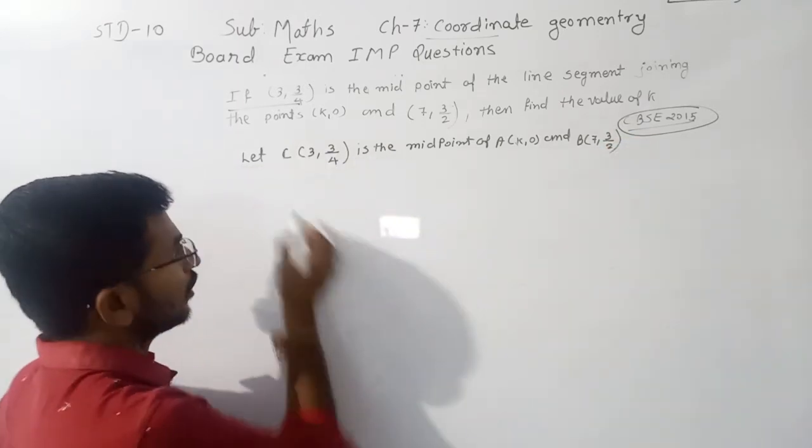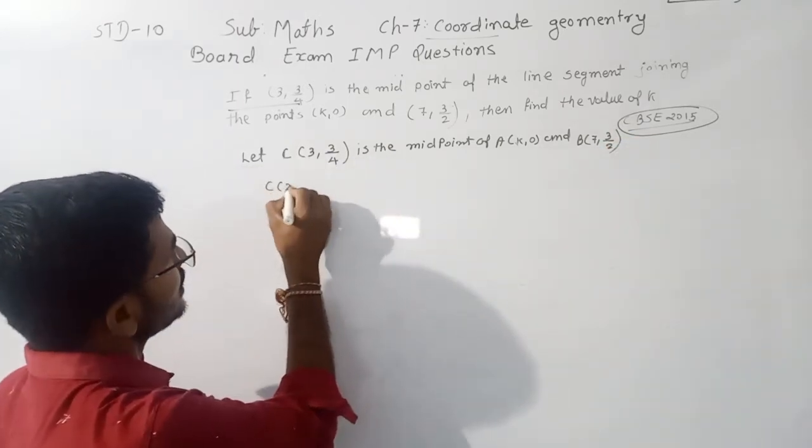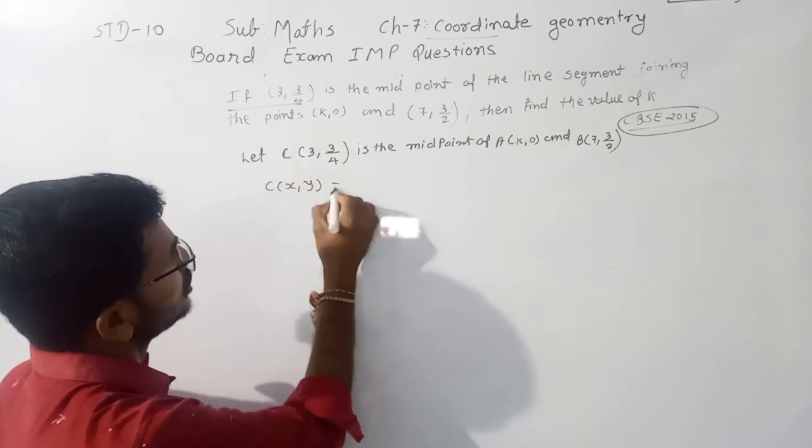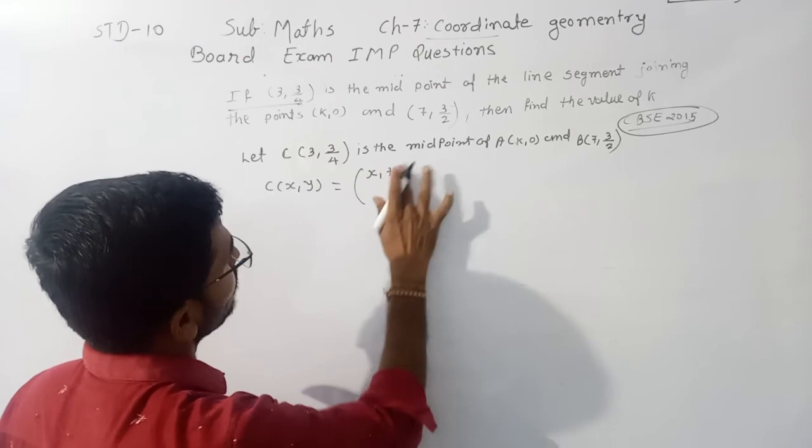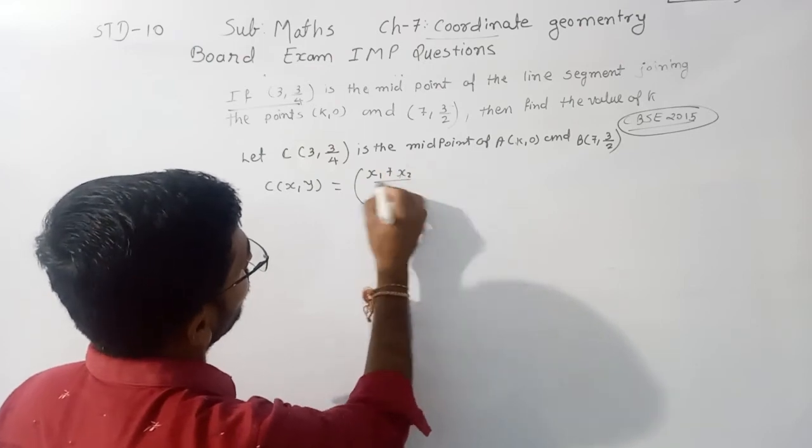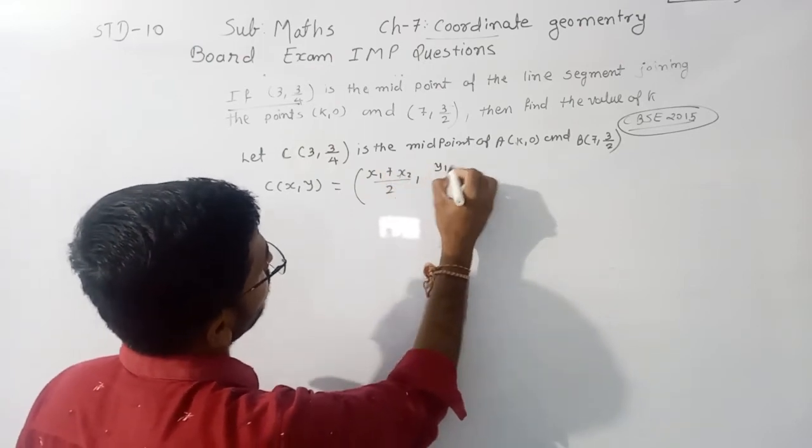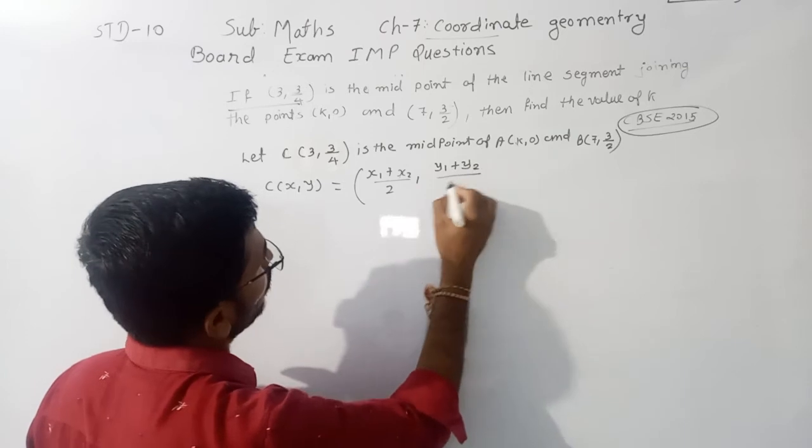According to midpoint theorem, C(x,y) is equal to (x1+x2)/2 and (y1+y2)/2.